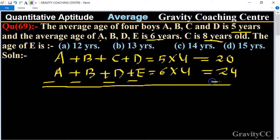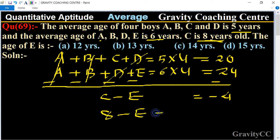Here A cancel, B we cancel and D, D cancel, so C minus E equal to minus four. And the age of C is eight years, so we put here eight minus E equal to minus four.